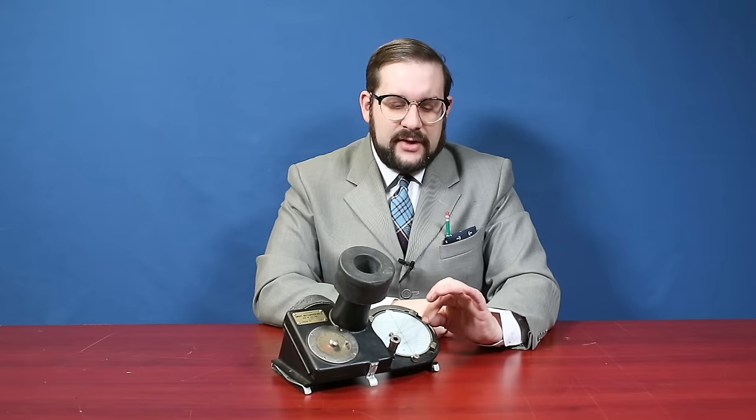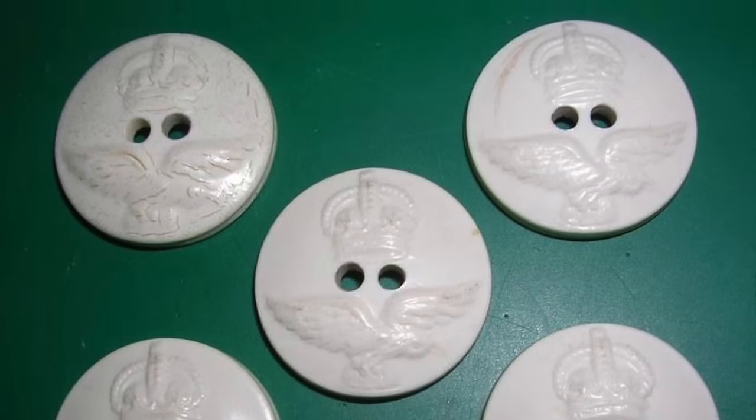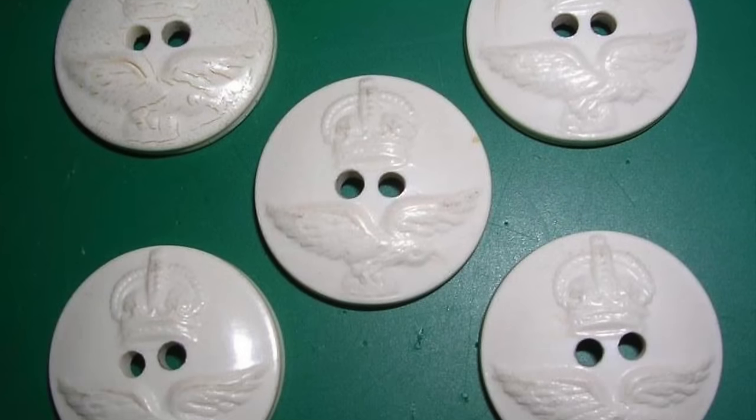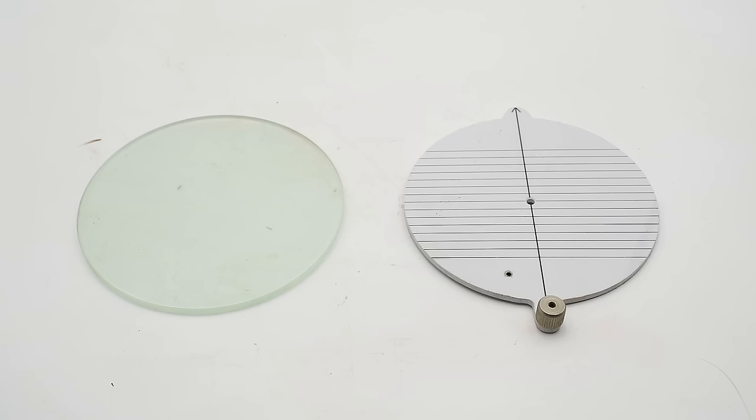However if it's formed into anything thicker than a thin sheet like this it tends to warp and crack and so this is typically used for stamping out small objects like shirt buttons or in this case parts of a navigational instrument. Just thought that was a neat thing to point out.